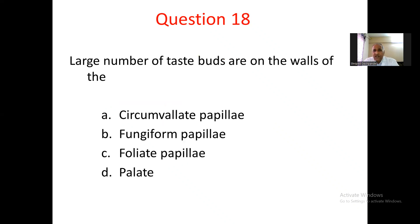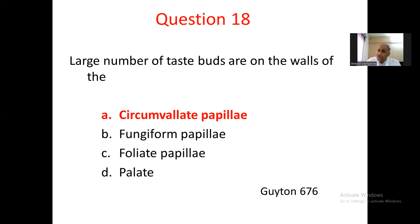Question number 18. A large number of taste buds are on the walls of: A. Circumvallate papillae, B. Fungiform papillae, C. Foliate papillae, D. Palate. The large number of taste buds are located in the circumvallate papillae. The remaining taste buds are present in the fungiform and foliate papillae. Hence the correct response is A. Circumvallate papillae.